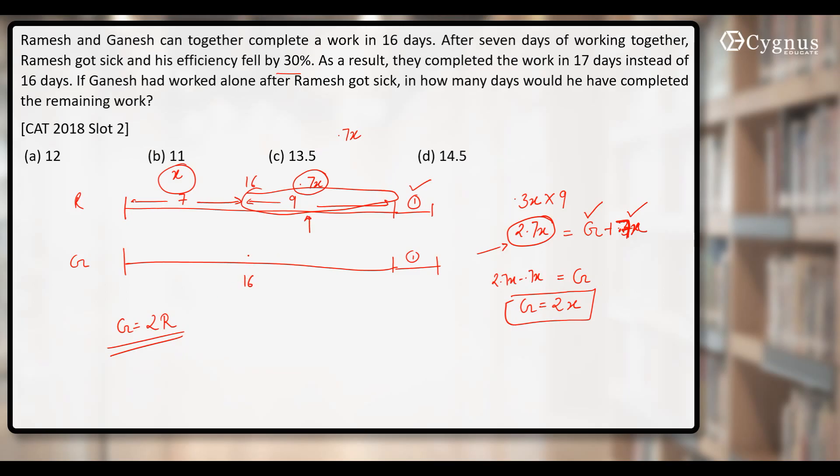And he needs to finish his work also, his contribution. After 7 days, Ganesh will work for 9 more days to finish his contribution, his work. Now, he needs to finish Ramesh's 9 days' work also. And we know that Ganesh is twice as efficient as Ramesh. If Ramesh can do remaining work in 9 days at his full efficiency, Ganesh is going to finish that work. Since Ganesh is twice as efficient as Ramesh, Ganesh will take only 4.5 more days to finish the remaining work of Ramesh, so that makes 13.5 days. My answer should be 13.5.